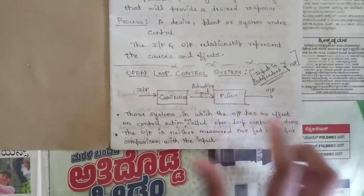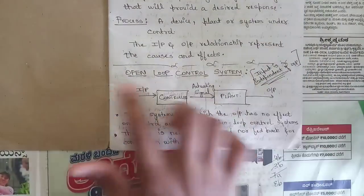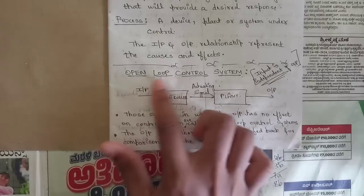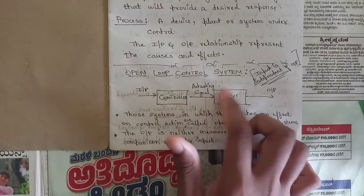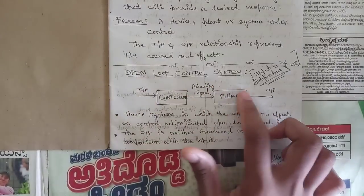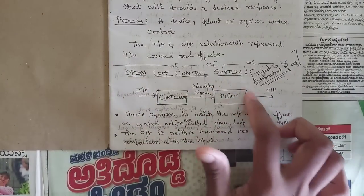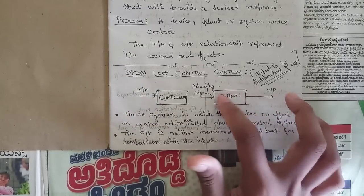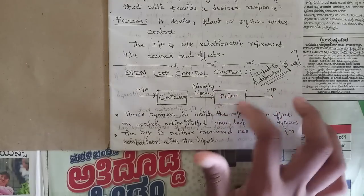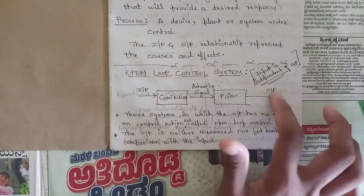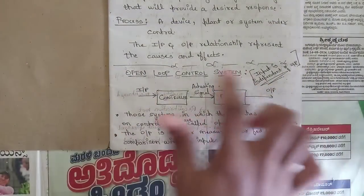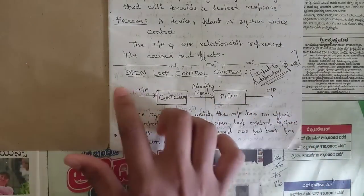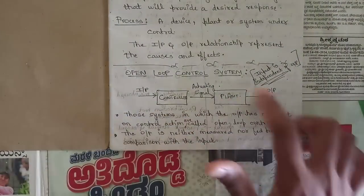This is a simple diagram of an open loop control system. In an open loop control system, input is independent of output. The input is given to a controller, then an activating signal is generated and given to a plant — a circuit block diagram. The desired output is generated from that plant. This is called an open loop control system, where there is no feedback path; it is connected in a single series line.